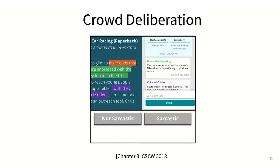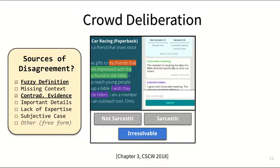They could agree to disagree by unanimously choosing an irresolvable. And we clarified that an irresolvable could be one of the correct answers to get the bonus. Workers also flagged the sources of disagreement for each case, which helped us analyze why disagreements arose and under what circumstances they could be resolved.